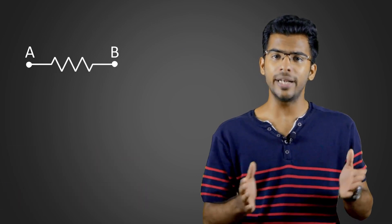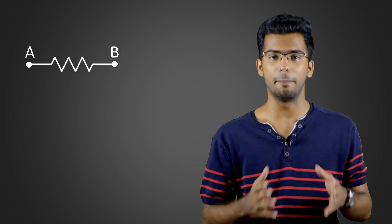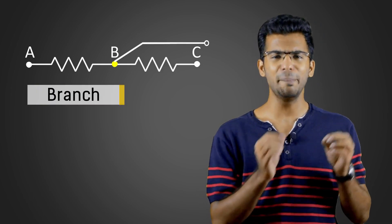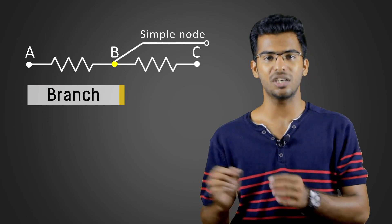An element having two ends in a circuit is called a branch. Two branches connected in series form a simple node or simple junction.